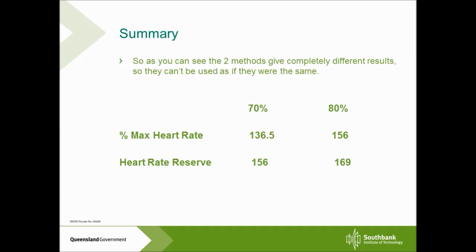One thing to note is that the two methods don't give us the same results. The percentage of maximum heart rate method figures are considerably lower than those from the heart rate reserve method. Generally, the percentage of maximum heart rate needs to be around 10 to 15 percent higher to get around the same figures. But as long as you understand that these methods are different, you can use whichever one you want when calculating your client's training heart rate.